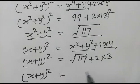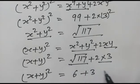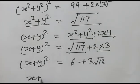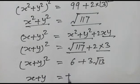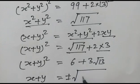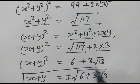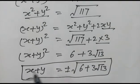So x plus y whole squared equals 6 plus 3 square root of 13. Therefore x plus y equals plus or minus square root of 6 plus 3 square root of 13. This is our required result. Thank you friends.